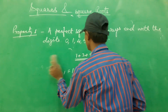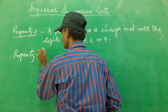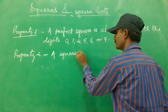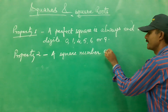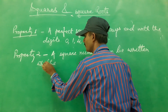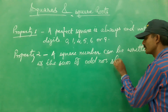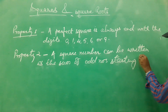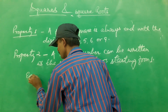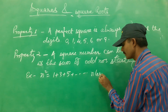So n squared will be the sum of the first n odd numbers: 1 + 3 + 5 + ... up to n terms. A square number can be written as the sum of all consecutive odd numbers starting from 1. After observing the pattern of numbers you can find some more properties. We will discuss one more property now.